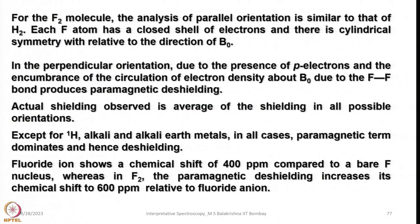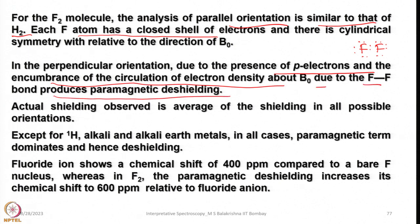Now let us look at F₂. The analysis of parallel and perpendicular orientation is very similar to H₂. Each F atom has a closed shell of electron density. In the perpendicular orientation, due to the presence of p electrons and the encumbrance of circulation of electron density about B_naught caused by the F–F bond, paramagnetic deshielding is produced. The electron density is greater and we are dealing with p orbitals, so there is considerable hindrance of circulation, producing a large σ_p term.